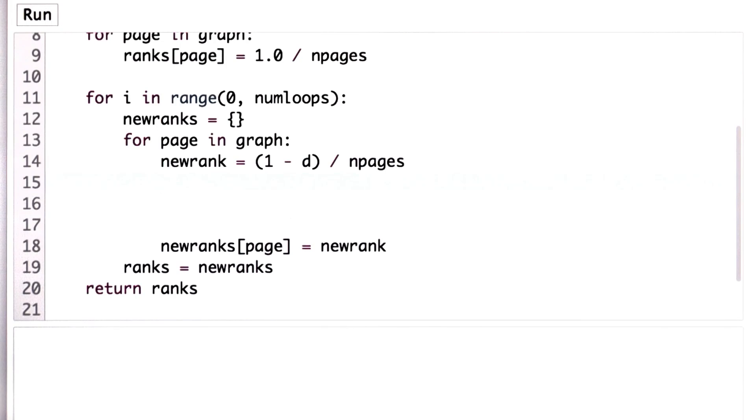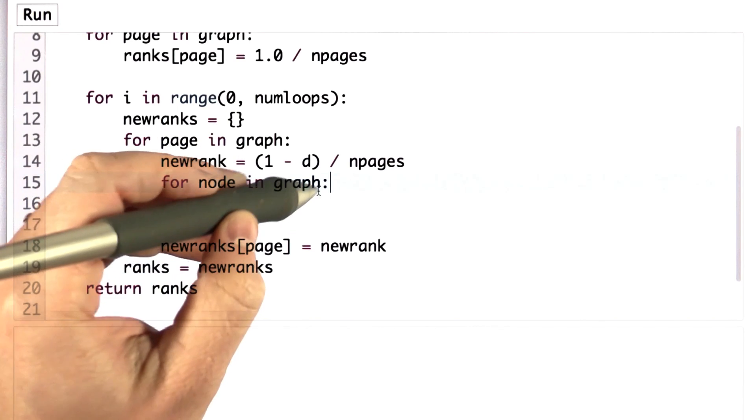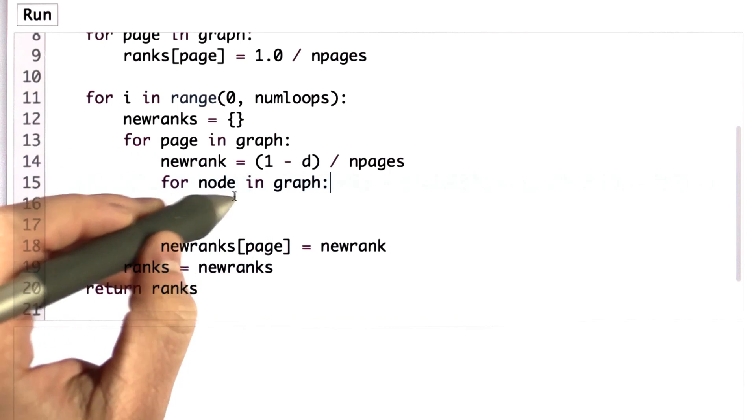So here's what we want to do. We want to go through all the pages in the graph. So we'll call them nodes this time. We can't use page again because we already used page up here. So we're going to go through each page in the graph, giving it the name node.